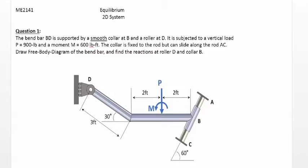This question is about equilibrium of rigid body, in this case a two-dimensional system. In this question we have a bent bar BD which is supported by a smooth collar at B and a roller at D against a vertical wall.